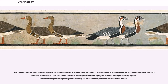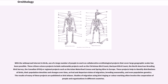The chicken has long been a model organism for studying vertebrate developmental biology, as the embryo is readily accessible. This also allows the use of electroporation for studying the effect of adding or silencing a gene. With the widespread interest in birds, large numbers of people have contributed to collaborative ornithological projects covering large geographic scales. These citizen science projects include nationwide projects such as the Christmas Bird Count, Backyard Bird Count, the North American Breeding Bird Survey, and regional projects such as the Asian Waterfowl Census and Spring Alive in Europe. These projects help to identify distributions of birds, population densities, arrival and departure dates of migration, breeding seasonality, and even population genetics. The results of many of these projects are published as bird atlases.